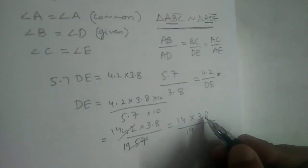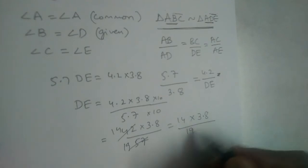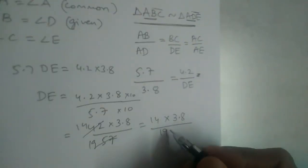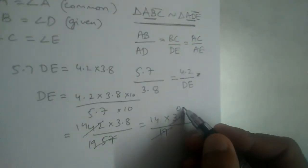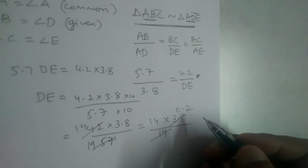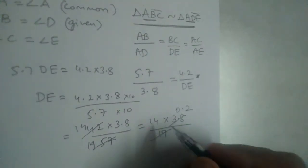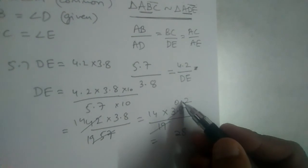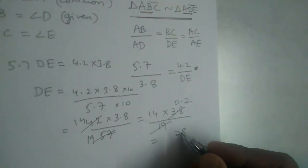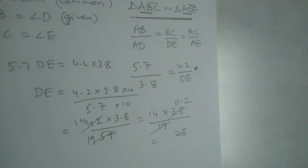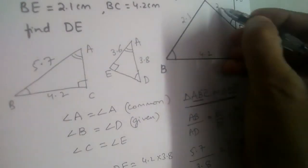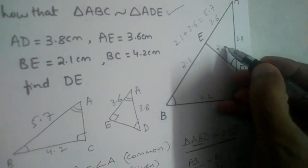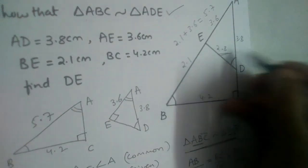Now, 19 × 2 gives 38, but it is 3.8, so it will be 0.2. And 14 × 2 is 28, but accounting for the decimal point it will be 0.2, giving 2.8. So the length of DE is 2.8 centimeters.